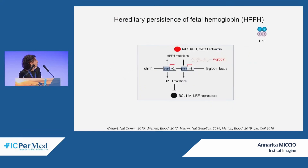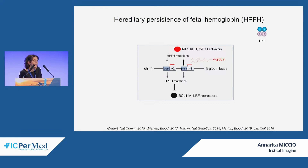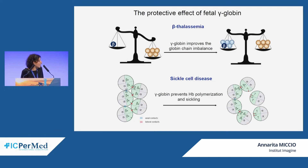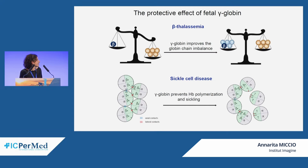Therefore, many editing approaches aim at reactivating expression of the fetal gamma-globin genes, which are normally silenced soon after birth. This is because the severity of both beta-thalassemia and sickle cell disease is mitigated by persistent synthesis of fetal gamma-globin in adult life, typically associated with genetic variants termed hereditary persistence of fetal hemoglobin, or HPFH mutations. Gamma-globin can improve the globin gene imbalance in beta-thalassemia, and in sickle cell disease it prevents hemoglobin polymerization and therefore red blood cell sickling.